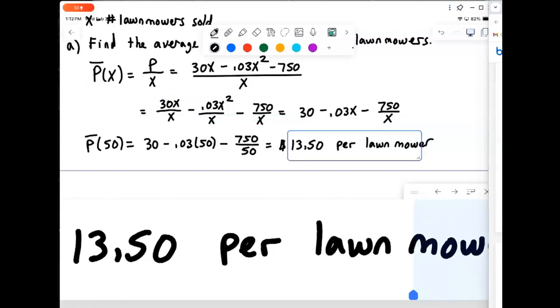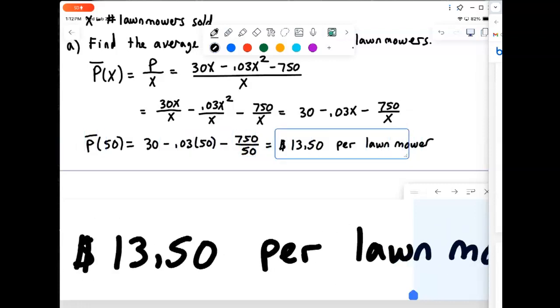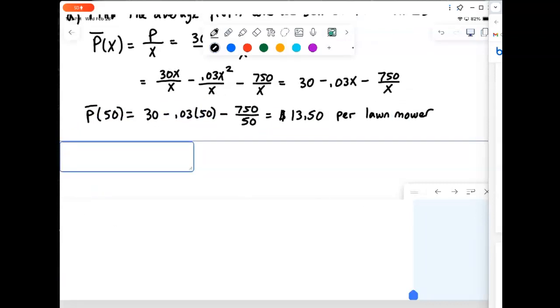So we're making an average profit of $13.50 per lawnmower, so that's our first question there. That's what we're making per lawnmower at that price, at that sell point, selling 50 of them. Okay, now part B says we want to compute P bar prime of 50.